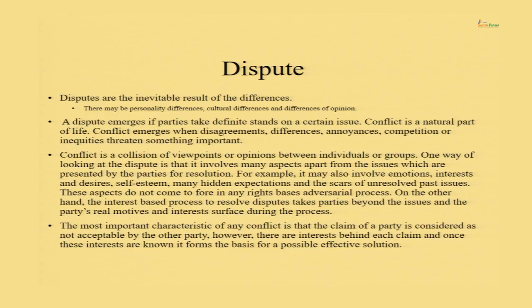But if both parties are of the opinion that the price may be somewhere from five to ten rupees, there is no definite stand. In such a situation, to avoid a dispute, you may approach an expert and ask the right price — that is a situation of avoiding the dispute. When you hold a definite stance, it is a situation of LIS, which means dispute or conflict. Conflict emerges when disagreements, differences, annoyances, competition or inequities threaten something really important for you. If because of disagreements your interests or rights are getting affected, that is a state of hostility — a state of conflict, a state that may be called a dispute.